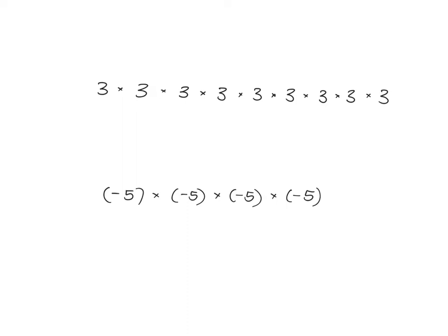Exponential notation, which is what we're going to be dealing with today, is just a shorthand way of being able to write things that are multiplied together. So for example, if we've got nine 3's that are all multiplied together, what we can say is we've got 3 to the power of 9.